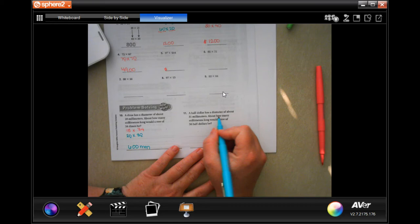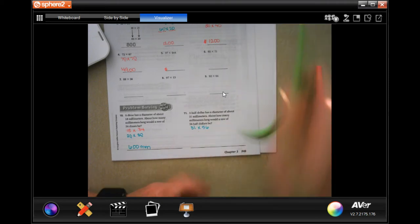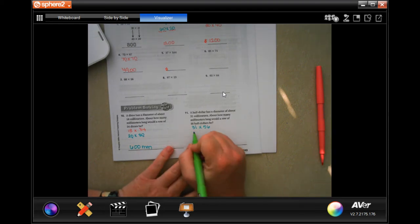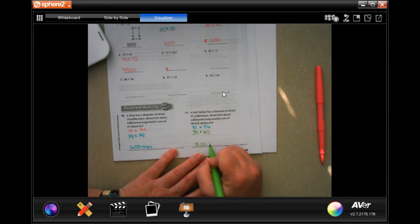A half dollar has a diameter of about 31 millimeters. How many millimeters long would a row of 56 half dollars be? Now, 31 is going to round to 30, and 56 is going to round to 60. Three times six is 18, and then I'm going to add in those two zeros. And mm again for millimeters.